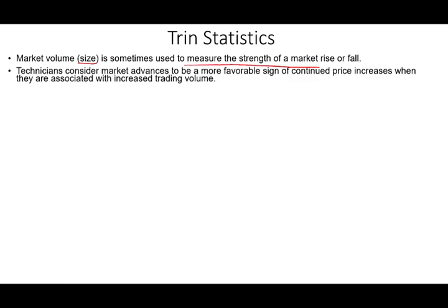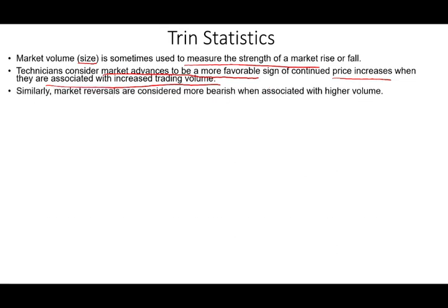Technicians look at volume and say market advances are a more favorable sign of continued price increases when they are associated with increased trading volume. For example, if yesterday's volume was 5 million and the market was down, and today the volume is 2 million and it went up, that's not a great indicator because the prior day's downside volume was higher. You want large volume when prices are going up.